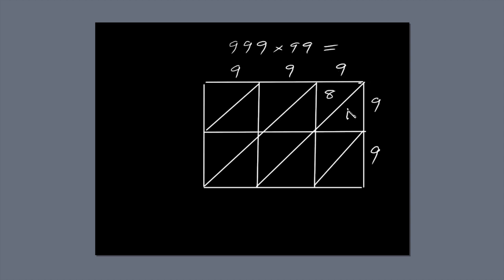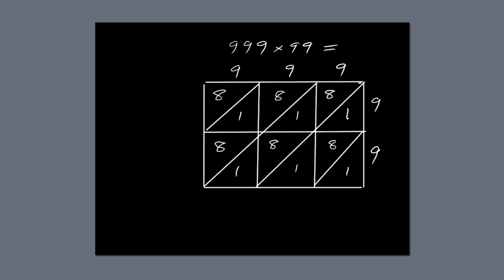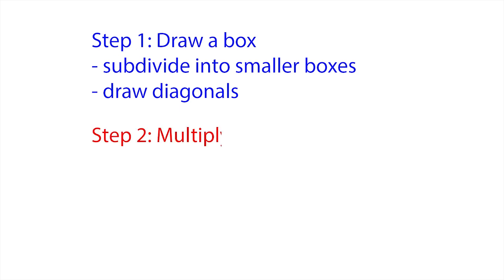Now, I've just noticed that all the other boxes can be filled in in exactly the same way because they all involve 9 times 9. So let's fill them in with the answer 81. That's the great thing about this method of solving multiplication problems. 999 times 99 looks a horrible problem, but this method simplifies it so it can be solved quickly and easily. That's step 2. Multiply and fill in the blanks with your answers.